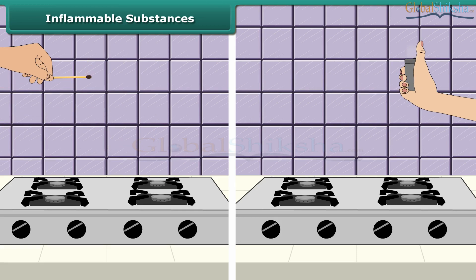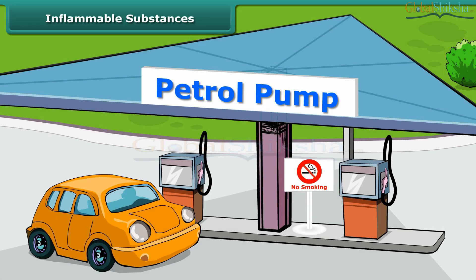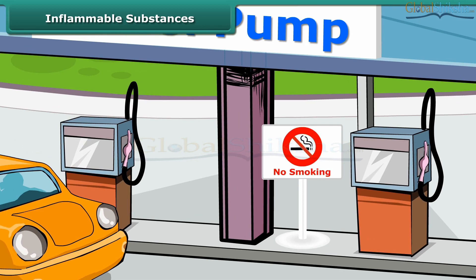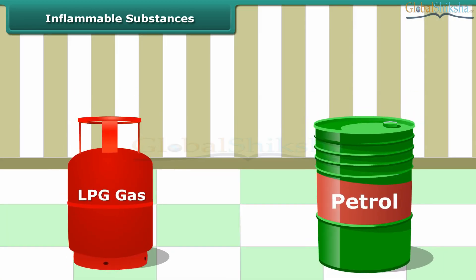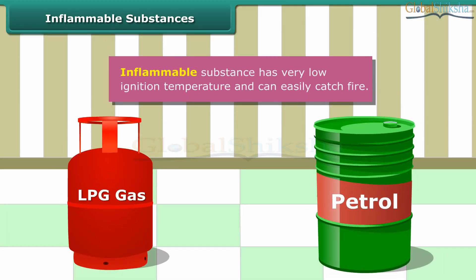Your mother would have told you to keep a burning matchstick or a lighter away from the LPG gas stove in the kitchen, because LPG catches fire very easily. Similarly, you must have seen no smoking signs at petrol pumps, because petrol also catches fire very easily. Substances like LPG and petrol are inflammable because they have a low ignition temperature, due to which they readily catch fire.